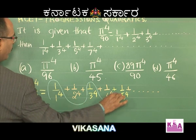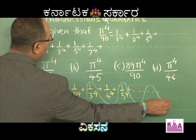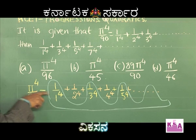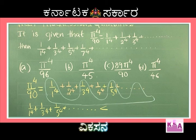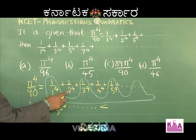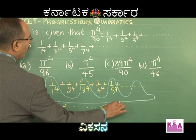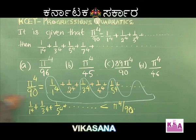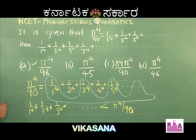The series 1/1⁴ + 1/3⁴ + 1/5⁴ + ... is a part of π⁴/90. Since π⁴/90 also includes 1/2⁴ + 1/4⁴ + ..., our target sum must be less than π⁴/90. So we search for options whose value is less than π⁴/90. As the denominator increases, the fraction decreases, so option A (π⁴/96) looks correct since 96 > 90.